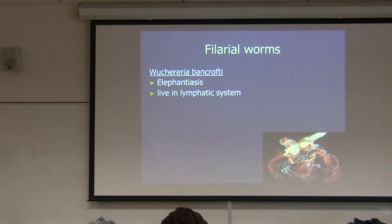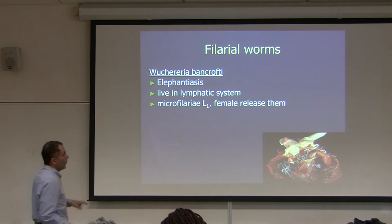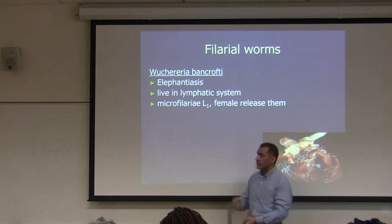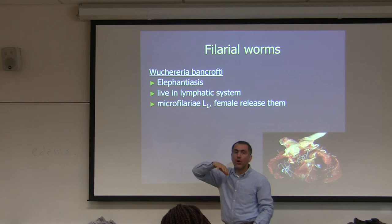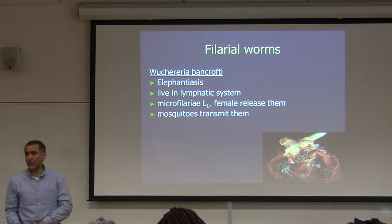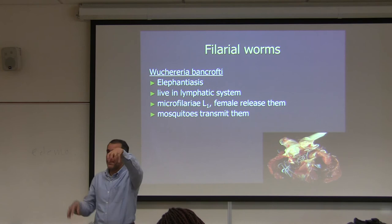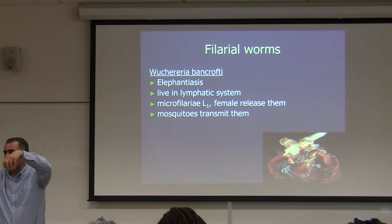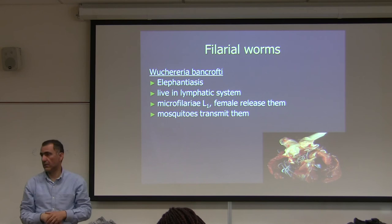Wuchereria bancrofti adults live in the lymphatic system, which is why they cause edema. The female releases microfilaria, which are L1 larval stages — making this a viviparous animal like Trichinella spiralis. All filarial worms are viviparous. A mosquito takes a blood meal from an infected person carrying microfilaria, then transmits L3 larvae to another person, where they become L4 and then adult.